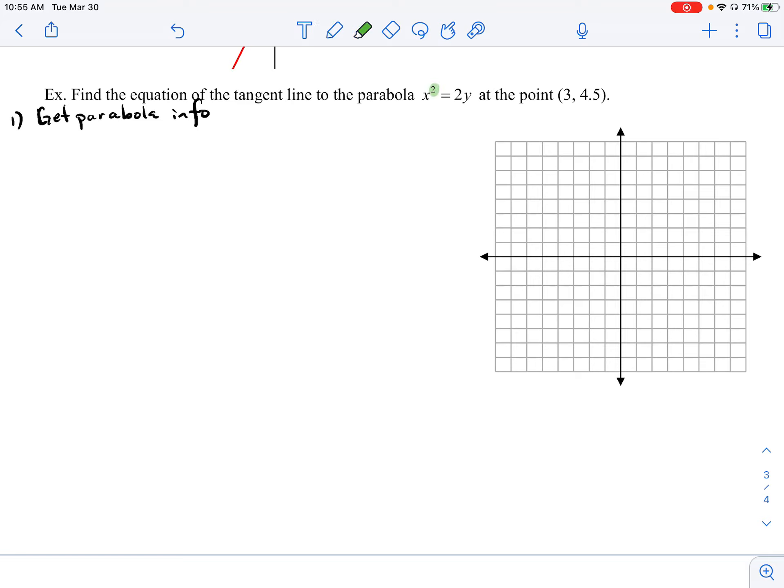First off, I noticed that my x term is squared. That means my parabola is going to be opening vertically, either opens up or opens down. And the fact that our 2 here, this coefficient of 2 represents our 4p.